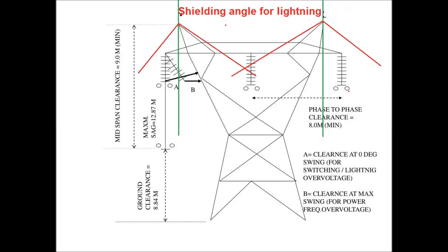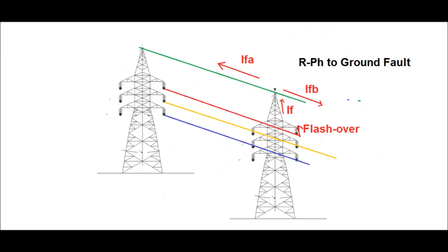Normally the shielding angle varies from 25 to 30 degrees. What is the purpose of the earth wire besides protecting from direct lightning to the phase conductors? It provides the return path for any earth fault occurring in any phase.